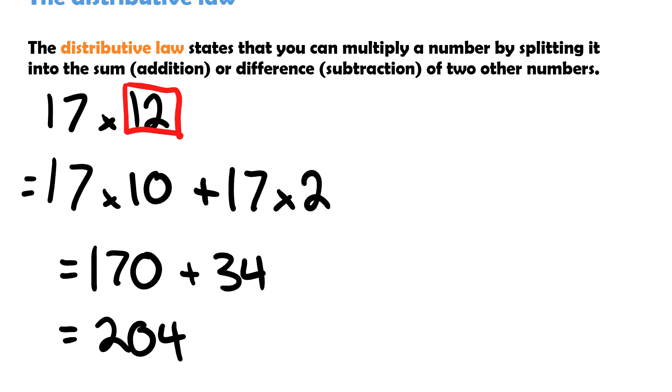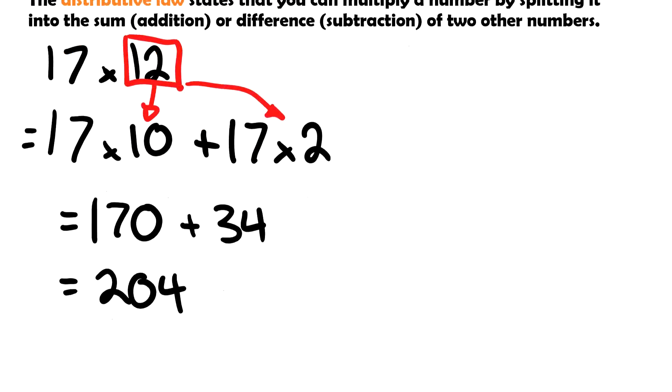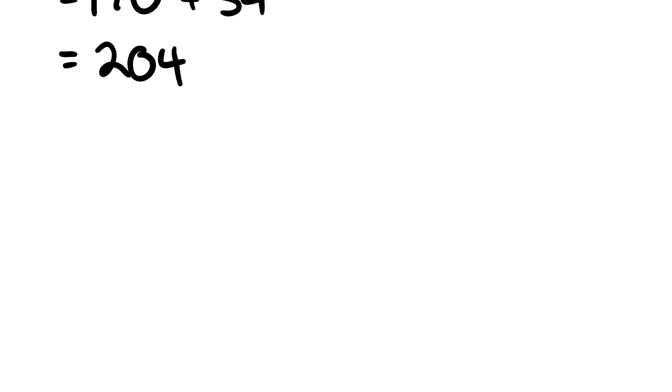Now I can just add these together and I end up with 204. So that is an example, and what we've done is that 12 has been broken up into 10 and into 2.